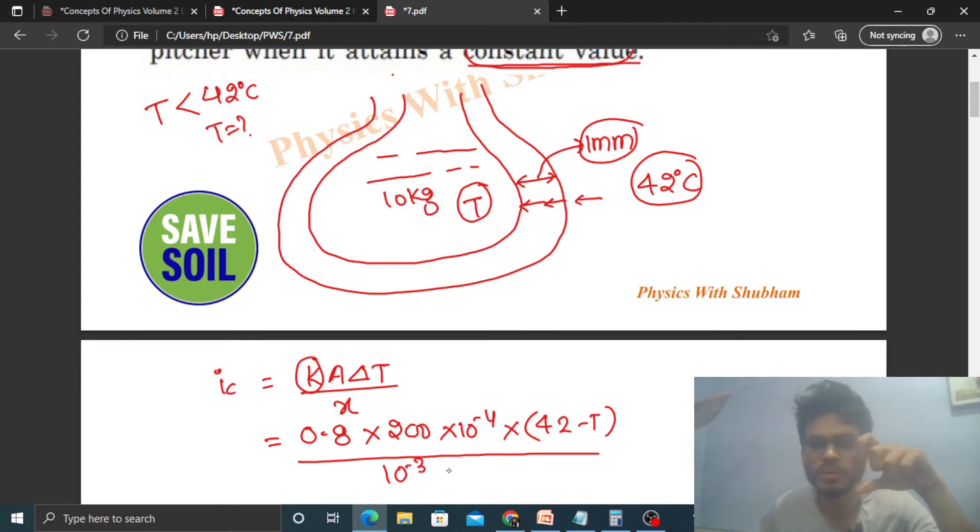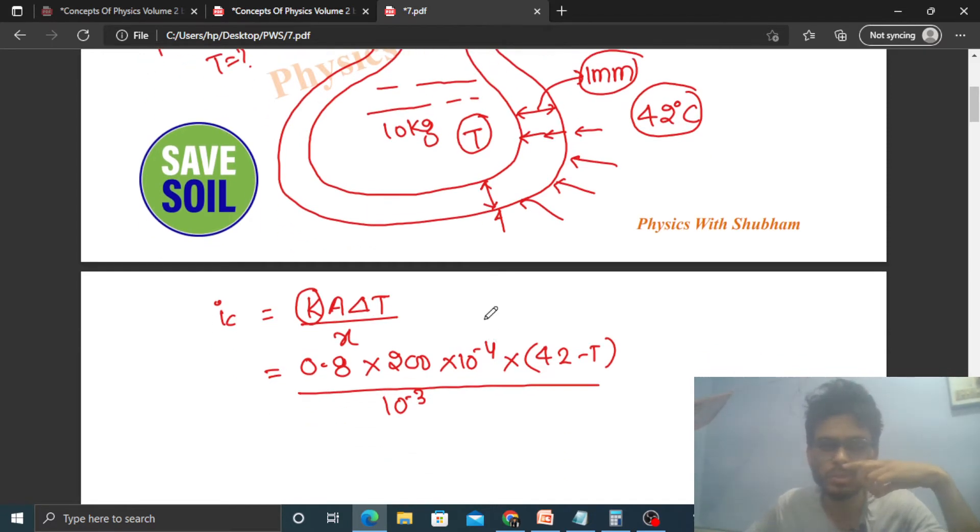Divided by x. What is x? Thickness of the pitcher walls is 1mm, so this will be simply 10 raise to the power minus 3 meter. Heat will flow from outside to inside the pitcher. So this is your heat current - this value is joules of heat per second.